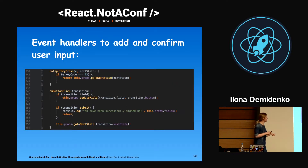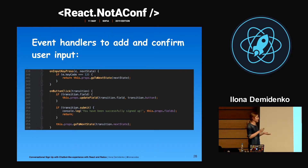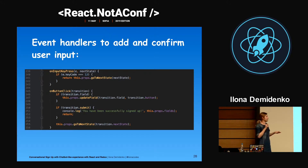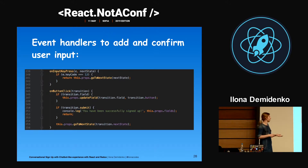I also added a new transition called submit for the last state. When the user has agreed and is ready to proceed to sign-up, they just click the submit button. At that point, I console all the data — the success message and all the fields the user entered during the conversation. The reason I just console everything is that I don't have a proper backend, but I want to show that it works.